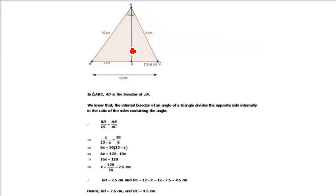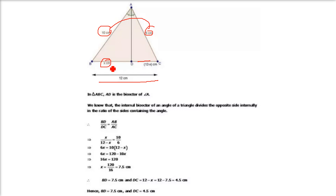Next sub-part: AB is 10, AC is 6, and BC is 12. So 10 by 6 equals X by (12 minus X), giving X equals 7.5. Once we find 7.5, we get 12 minus 7.5 equals 4.5. So BD is 7.5 and DC is 4.5.